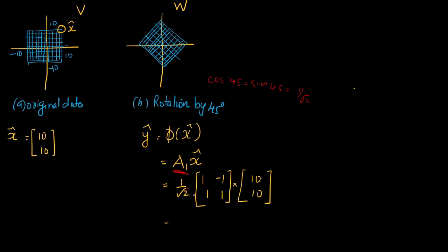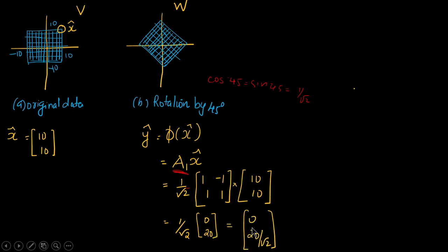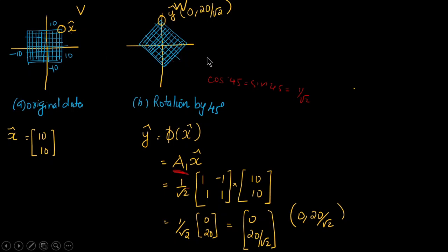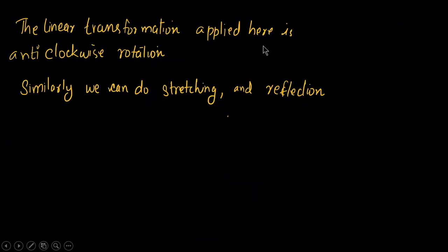The result is (1/root2) * [0, 20], which gives the vector [0, 20*root2]. This position lies on the Y axis. That means we have rotated the vector 45 degrees in the anticlockwise direction — the corner of the subspace reaches the Y axis. The linear transformation applied here is anticlockwise rotation. Similarly, we can do stretching and reflection.